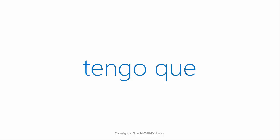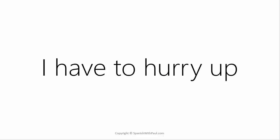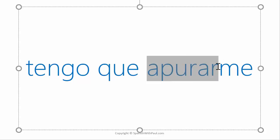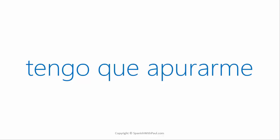First example: what is 'I have to'? Tengo que. To express 'I have to hurry up' would then become 'Tengo que apurarme' — literally 'I have to hurry up myself.' Here you can see the reflexive nature of this verb being used. Tengo que apurarme.